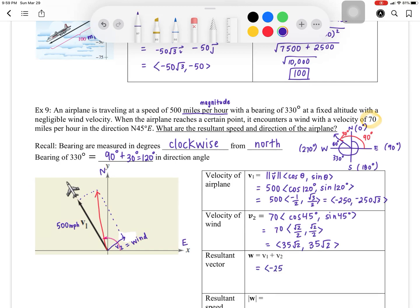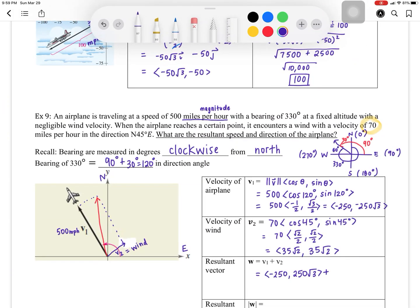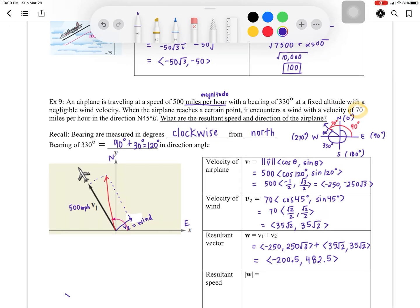V1 was negative 250, and 250 square root of 3. V2 was the wind. And that would be 35 square root of 2, and 35 square root of 2. You can go ahead and put this in the calculator and give yourself a decimal answer. That's going to give you negative 200.5 and 482.5. That is your resultant vector after adding the velocity of the airplane and the velocity of the wind.